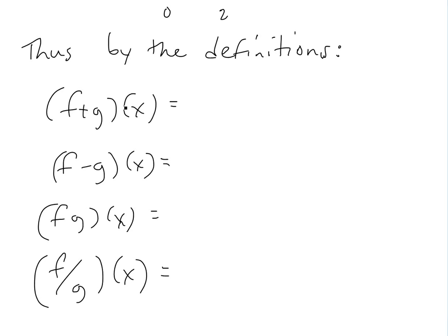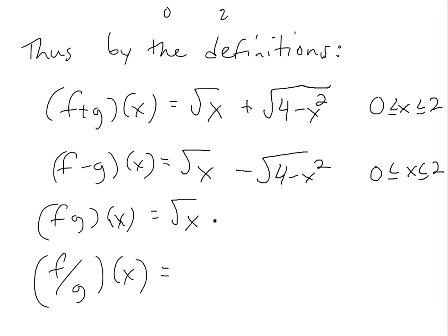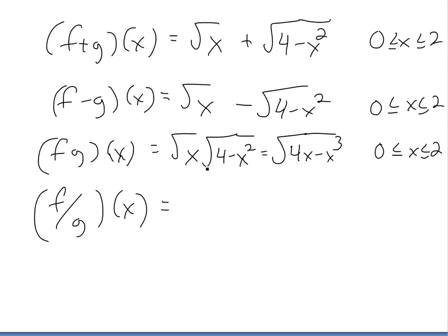Applying the definitions: (f+g)(x) = √x + √(4−x²), defined on [0, 2]. (f−g)(x) = √x − √(4−x²), same domain. For multiplication, (f·g)(x) = √x · √(4−x²), which simplifies by putting it inside one square root: √(4x − x³), also with domain [0, 2].